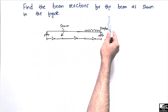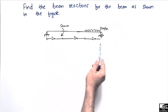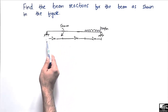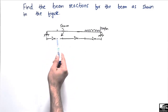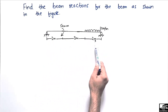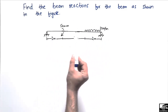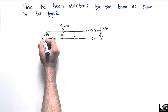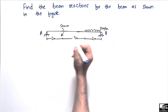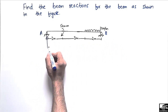The problem states: find the beam reactions for the beam shown in the figure. This is a simply supported beam with a moment of 5 kilonewton-meter acting at a distance of 2 meters from the hinge support, and a uniformly distributed load of 2 kilonewton per meter distributed over a length of 2 meters at the left side of the beam.